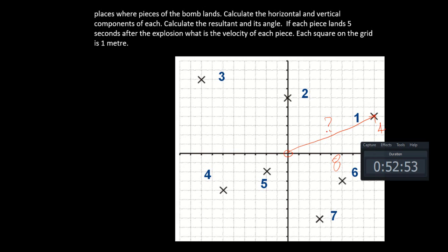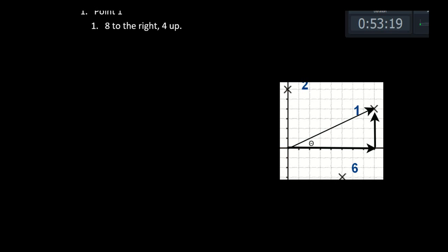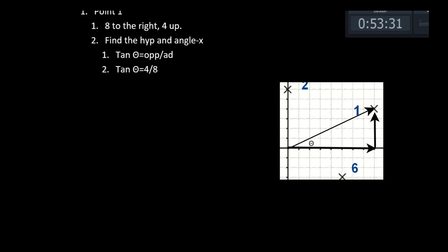I'll use the Pythagorean theorem. Point one: eight right, four up. Finding the angle first using tangent: tan equals four over eight. Then I have to use the inverse tan button on my calculator — remembering from grade 10 how to do that. That gives me 26.3 degrees north of east.